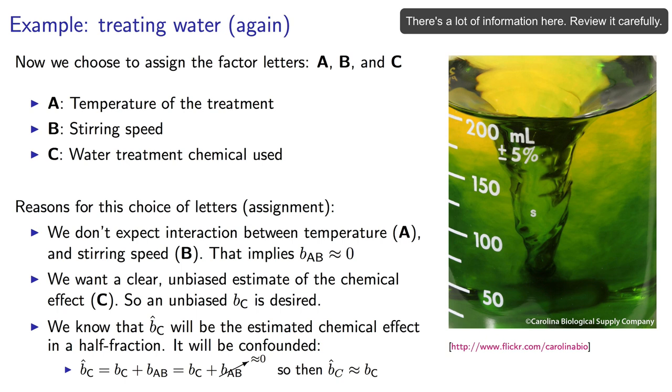So now when I plan my experiments, I could rather assign A as the temperature, B as the stirring speed, and factor C, the chemical factor, can be set as A times B.